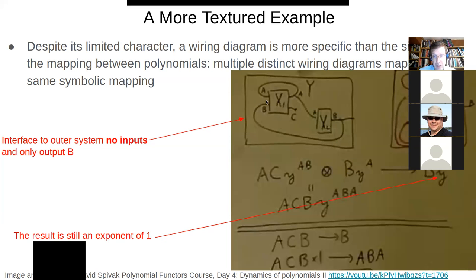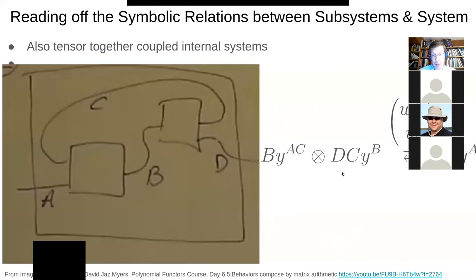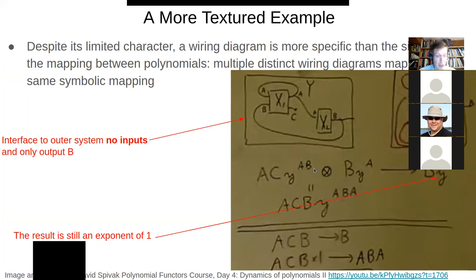And that's tensored with this one here. This is a symmetric monoidal category. So you could go in either order, tensor them in either order. Or you don't have to pick them only in one order.